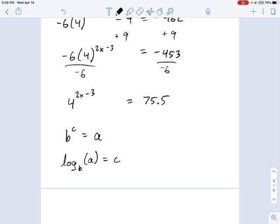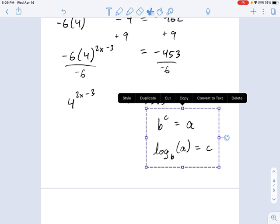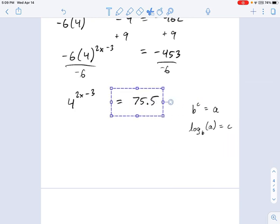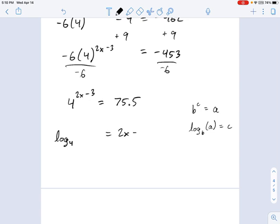So can we use this basic definition of logarithms to turn our equation right here into a more useful form? Let's try it out. So my base is 4, so this is going to be logarithm of base 4. My exponent is 2x minus 3, that's going to go over here. And my argument is 75.5. So logarithm base 4 of 75.5 equals 2x minus 3.